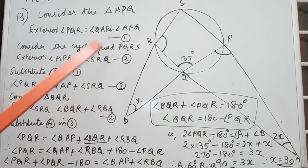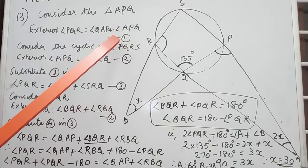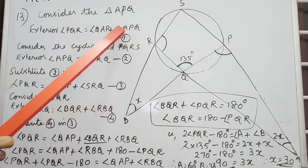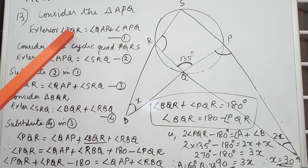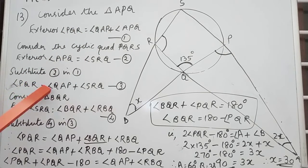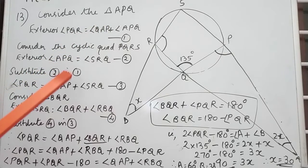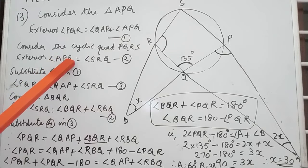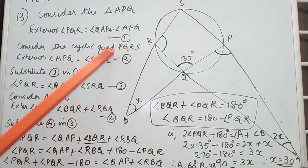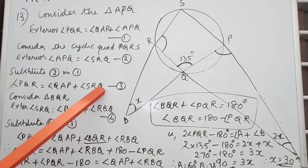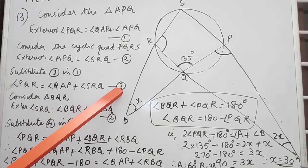Look at equation number 1 and equation number 2. Substituting equation 2 into equation 1: PQR is equal to QAP plus, instead of APQ we can write SRQ. So APQ is replaced by SRQ. That is equation number 3.